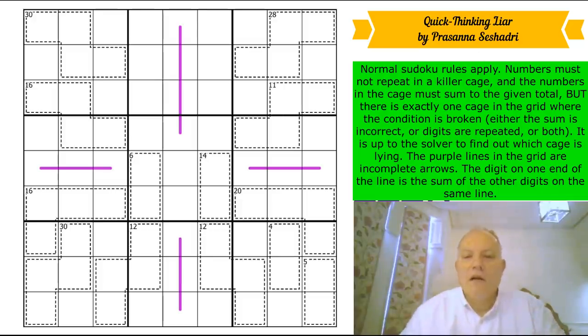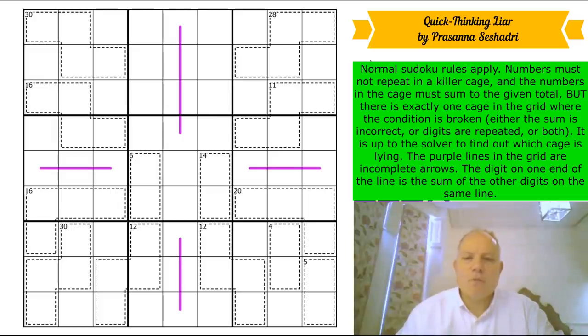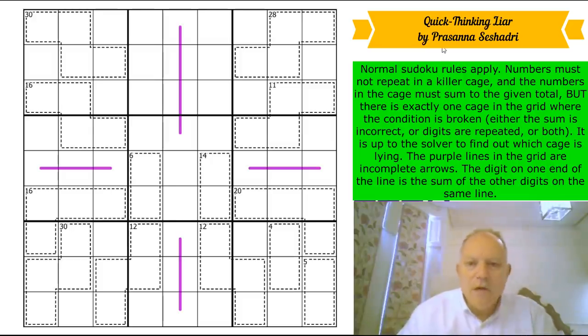Normal Sudoku rules apply. Numbers must not repeat in a killer cage and must sum to the given total. However, there is exactly one cage in the grid where the condition is broken—either the sum is incorrect or digits are repeated or both. It's up to the solver to find out which cage is the liar. The purple lines are incomplete arrows—the digit on one end is the sum of the other digits on the same line.